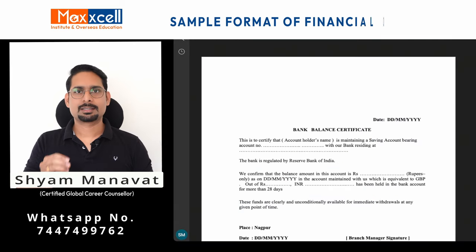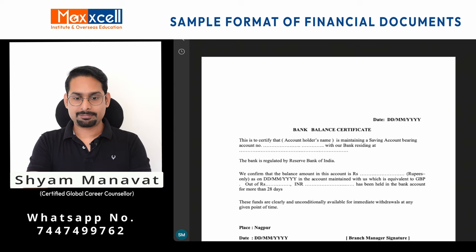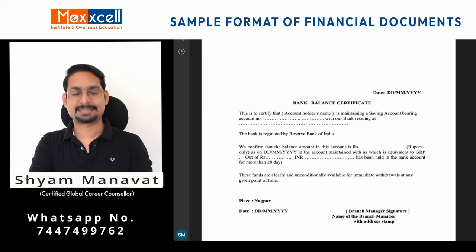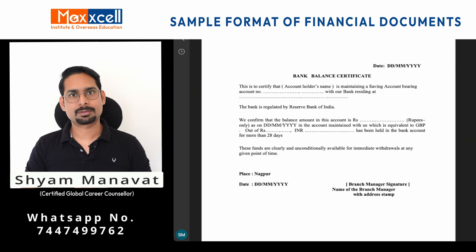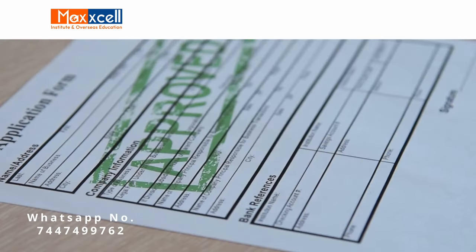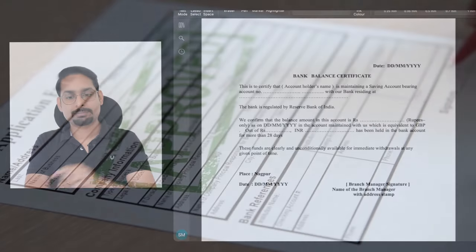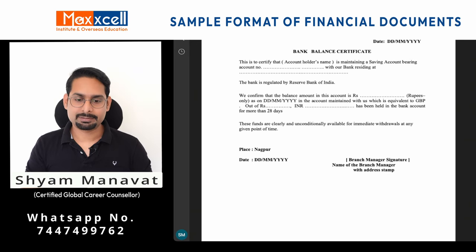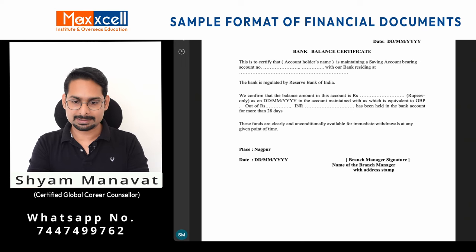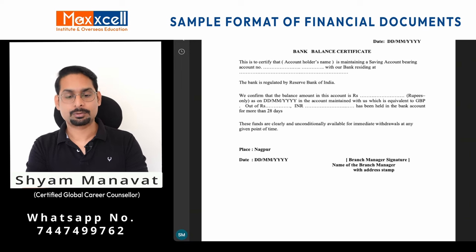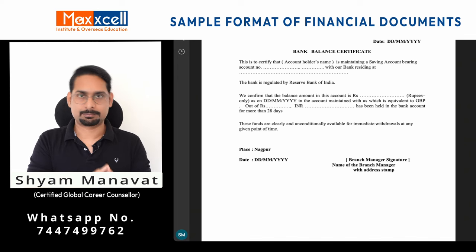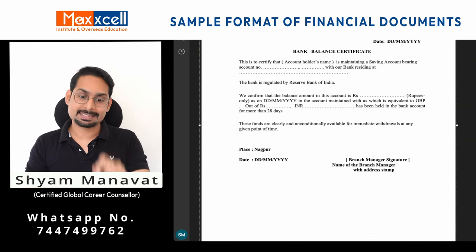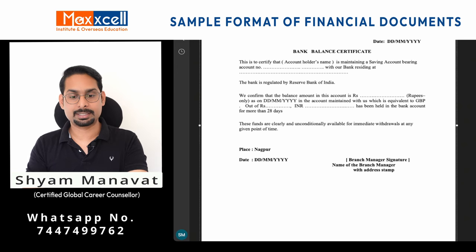Now let's look at the sample format of financial documents. If you are showing funds through a savings account, you need at least two months of bank statement — stamped and signed by the bank. Apart from that, you need a bank balance certificate. Pause the video to read the required format. One important point: the certificate must state that the funds have been held in the bank for more than 28 days. As per UKVI norms, your funds must be in the bank account for more than 28 days, and the bank must clearly state this in the balance certificate.